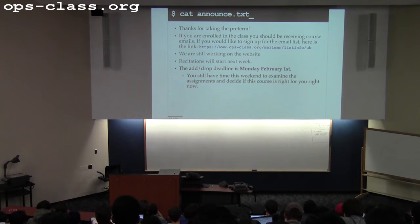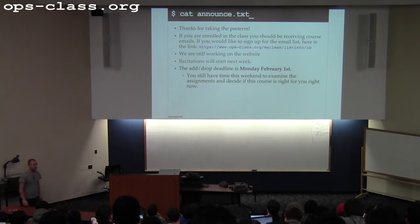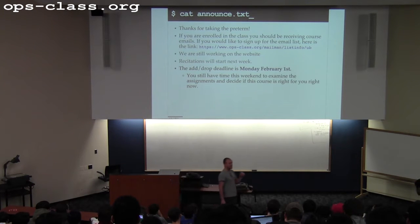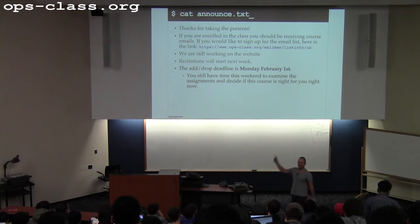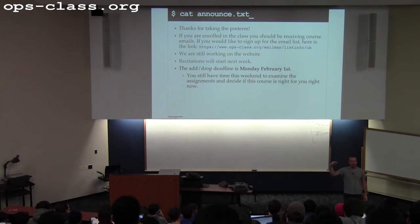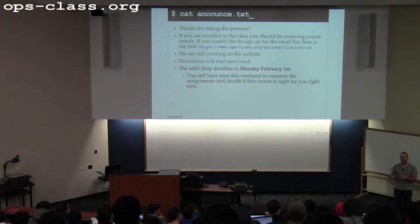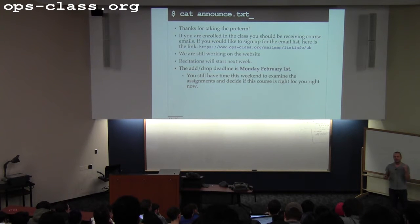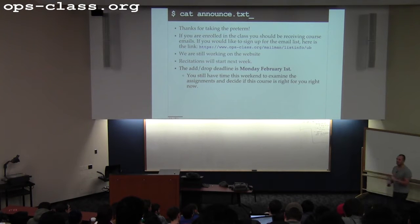One last announcement: if you are looking for a partner for the class — which, as I pointed out, is pretty important — why don't we meet briefly back in Davis Hall after class today. If you have time and are looking for a partner, we'll do a little unassigned-student meet-and-greet speed-dating type thing outside my office right after class. If you're looking for a partner, please come if you can. You do need one, and you will want one very soon.